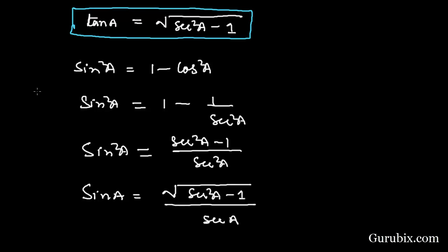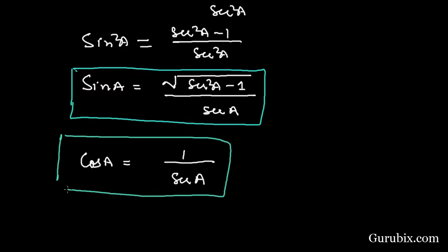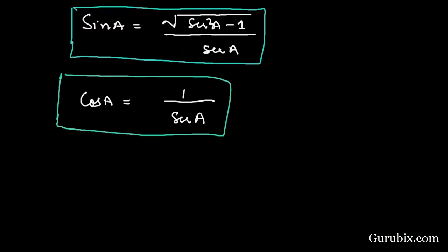We know that cos A = 1/sec A. This is how we can write cos A in terms of sec A.